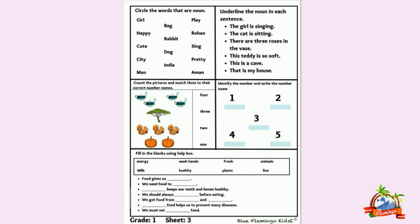So what we have to do is circle the words that are nouns. Har cheez jiska bhi ek naam hota hai, usse hum noun kehte hai. We have to circle the words. Bag — bag is a thing's name, so it is a noun.